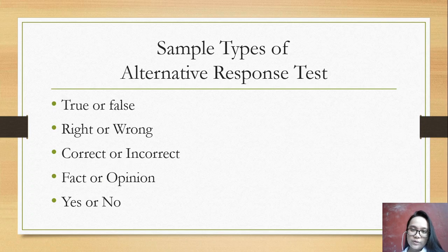So here are the sample types of alternative response tests: true or false, right or wrong, correct or incorrect, fact or opinion, and yes or no.